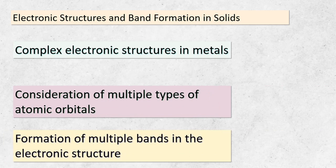Today, we're delving deeper into the world of solid-state physics. When it comes to metals, things get a bit more intricate. The electronic structures of most metals are actually more complex than what we previously explored. We need to take into account not just one type of atomic orbital on each atom, but multiple types. Each type of orbital contributes to its own unique band in the material's electronic structure. This gives rise to a series of bands, collectively forming what we call the band structure of a solid. When you think about the electronic makeup of a bulk solid, picture it as a symphony of bands, each representing a different set of electronic states.